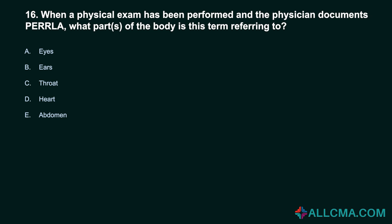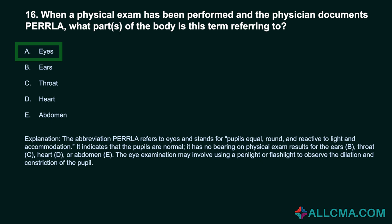Question 16: When a physical exam has been performed and the physician documents PERLA, what part of the body is this term referring to? A. Eyes. B. Ears. C. Throat. D. Heart. E. Abdomen. Correct answer: A. Eyes. The abbreviation PERLA refers to eyes and stands for pupils equal, round, and reactive to light and accommodation. It indicates that the pupils are normal and has no bearing on physical exam results for the ears, throat, heart, or abdomen. The eye examination may involve using a penlight or flashlight to observe the dilation and constriction of the pupil.